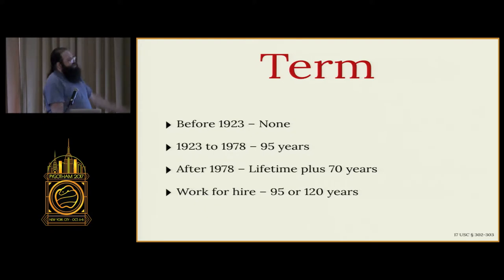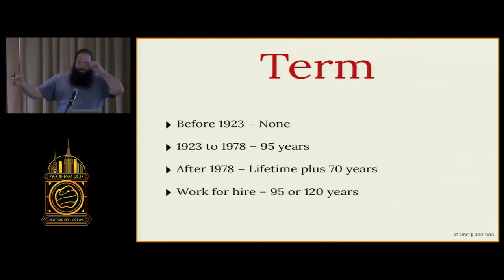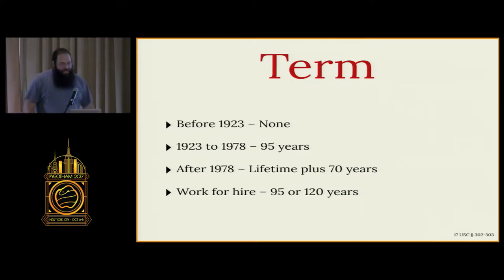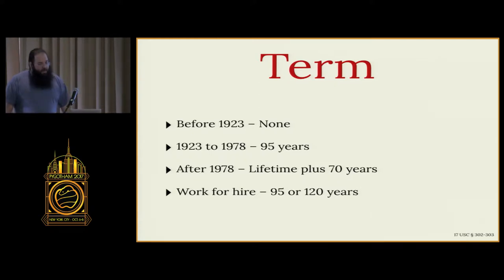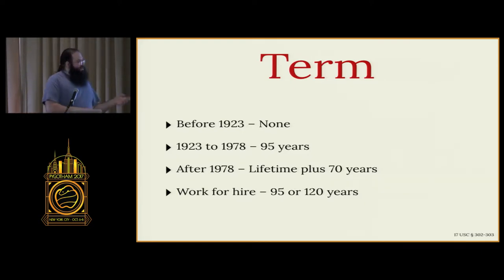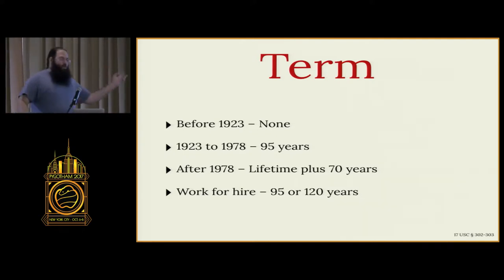The last bit to define is the term of copyright — how long it lasts. The Constitution specified that these would be for limited times. Roughly speaking: if it was made before 1923, it's not under copyright, period. If it was made between 1923 and 1978, it is subject to copyright for at most 95 years, possibly less if they screwed up their paperwork. Works published after 1978 and owned by a human being get the lifetime of the author plus 70 years. Things made after 1978 and owned by a company are either 95 years from publication or 120 years from creation, whichever is shorter.